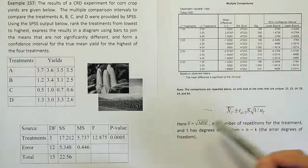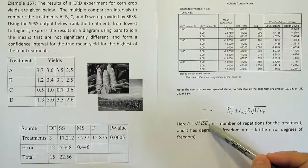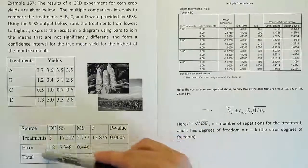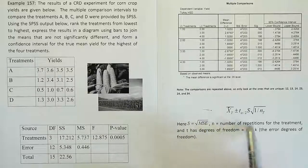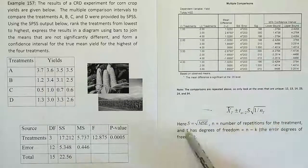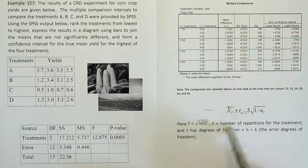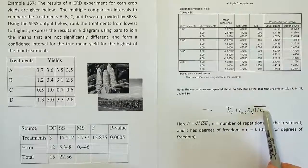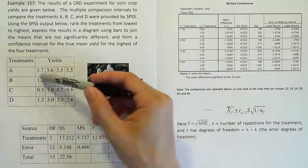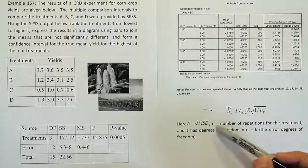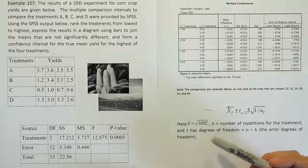And then we need the standard deviation which is defined as the square root of MSE. Now MSE is here, the mean square for error. We just take the square root of that to get our S. N is the number of repetitions for the treatment. So what they mean here is that NT is the number of repetitions for the treatment. In other words, we have 4 here, so that's what NT should be. There's a subscript that's missing for that statement.